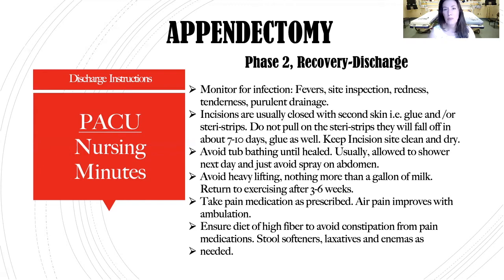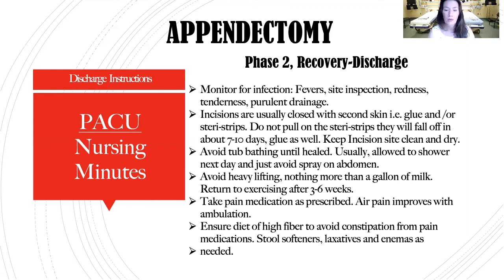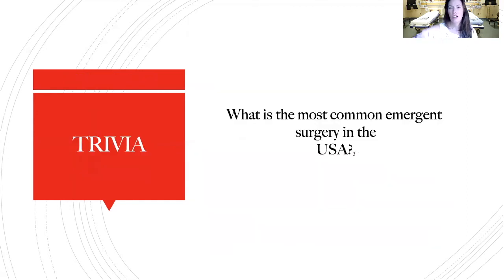Patients should take pain medication as prescribed and take any stool softeners as prescribed to avoid constipation. They'll also want to stay hydrated and eat a high-fiber diet. If they don't have a bowel movement in two to three days, they should use a Fleet's enema.